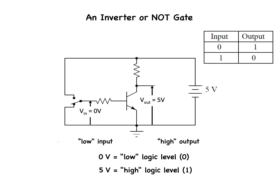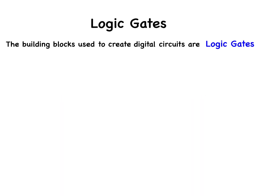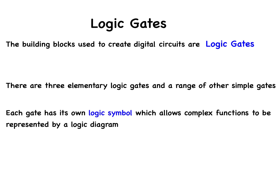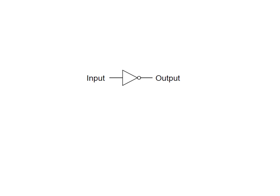The gate shown here with the single transistor is known as an inverter, or a NOT gate, because its output is the exact opposite digital signal as what is input. For convenience, gate circuits are generally represented by their own symbols rather than by circuit diagrams of transistors and resistors. This is the symbol for a NOT gate. Logic gates are the building blocks used to create digital circuits. Each gate has its own logic symbol, which allows complex functions to be represented by a logic diagram. The function of each gate can be represented by a truth table. The NOT gate has one input and one output.